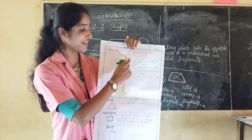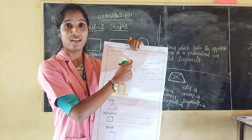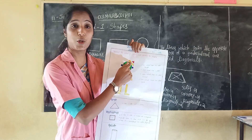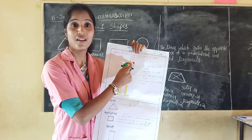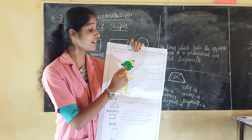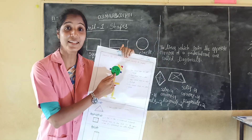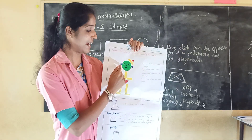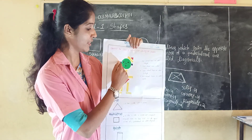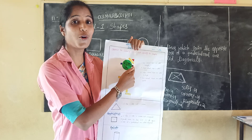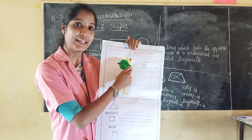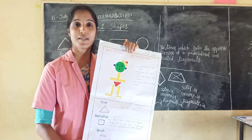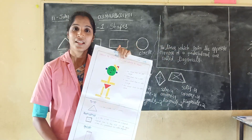Red color: triangle. Yellow color: rectangle. Green: circle. And blue colored shapes: square. Understood? Yes.